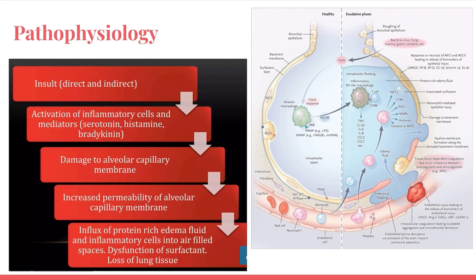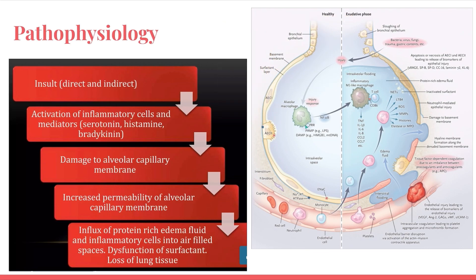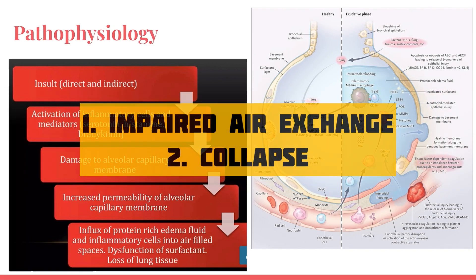The pathophysiology starts with a direct or indirect insult, which leads to activation of inflammatory cells and mediators — TNF, interleukin-1, and interleukin-6 are important. Other mediators like serotonin, histamine, and bradykinin cause damage to the alveolar-capillary membrane and increased permeability, leading to influx of protein-rich fluid and inflammatory cells into the alveoli. This disrupts surfactant, causes loss of lung tissue, impairs air exchange, and leads to lung collapse.